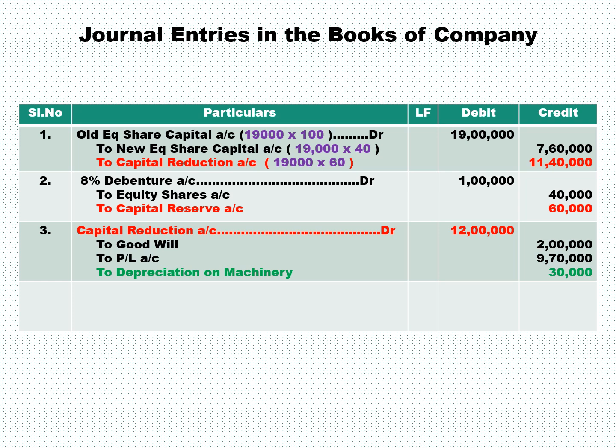Next entry: 8% debenture account debit 1 lakh. In place of 1 lakh, we give equity shares worth 40,000. The remaining 60,000 is credited to capital reserve. So the entry is: 8% debenture account debit 1 lakh, to equity shares 40,000, to capital reserve 60,000.